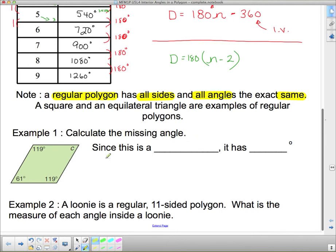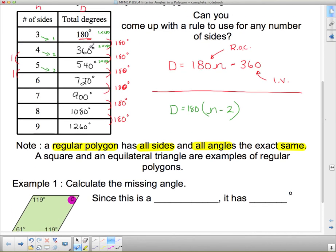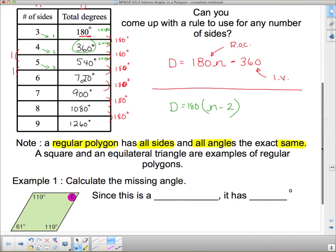So example number one, calculate the missing angle. We've got this missing angle right here. This C value is missing. Now, this is a four-sided figure. So if this is a four-sided figure, we can look up here and say, I know a four-sided figure has to have 360 degrees.